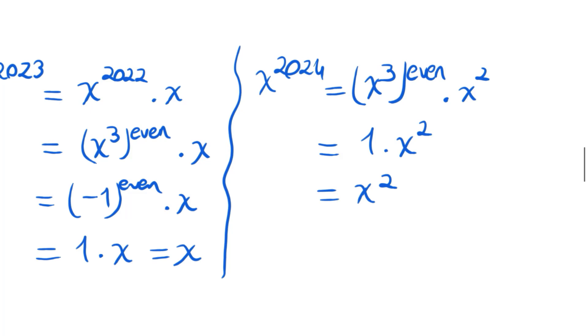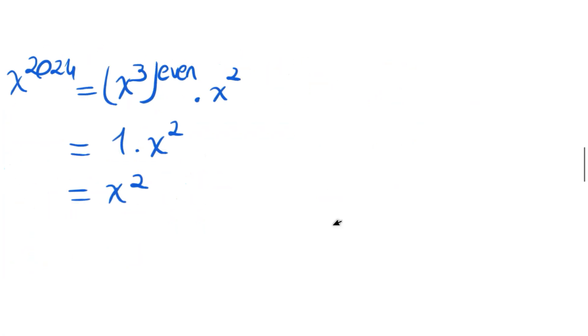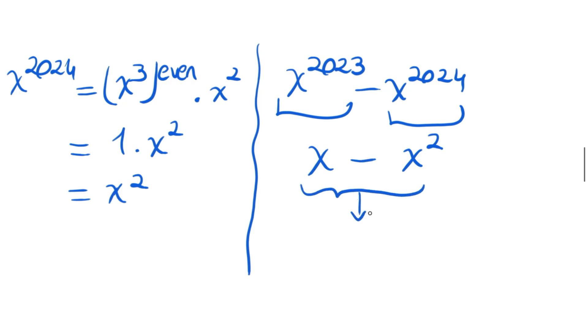Now we have x to 2023 minus x to 2024. This is equal to x, and this is equal to x squared. So x minus x squared is given to us as 1 from the beginning of the question, so the answer is just 1.